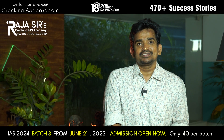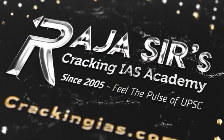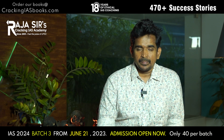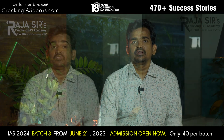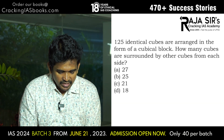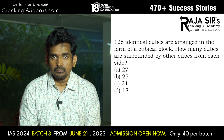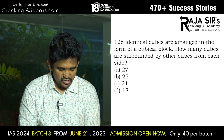This problem is covered in our CSAT book. Now we are going to solve two problems from the CSAT paper 2023 of UPSC Civil Services Preliminary Exam. The first problem is: 125 identical cubes are arranged in the form of a cubical block. How many cubes are surrounded by other cubes from each side?